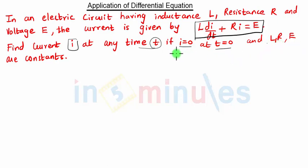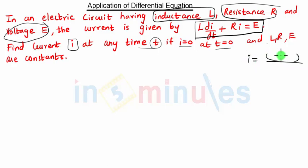L, R, and E are constants. We have an electric circuit with inductance L, resistance R, and voltage E. The current is given by this equation, but we need to find the current i as an equation in terms of t.